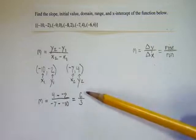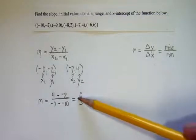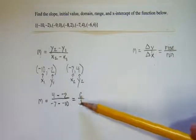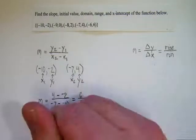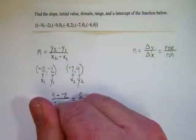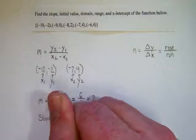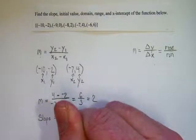So now I've reduced the problem to this. This is really just a division problem. This is saying do 6 divided by 3. And 6 divided by 3 is 2. So in this particular problem, my slope that I just calculated would be 2.